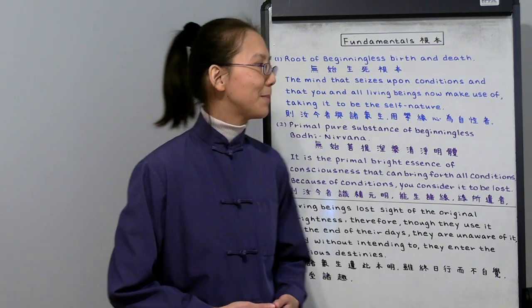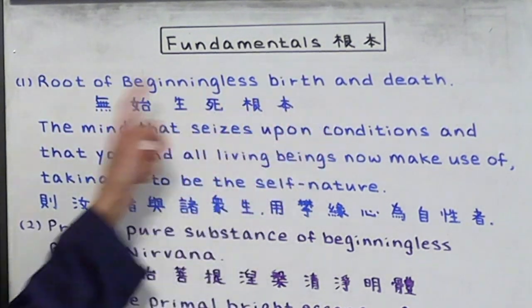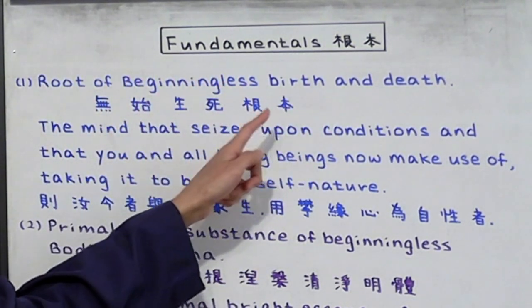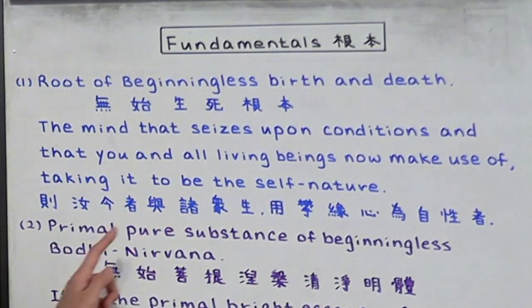There are basically two fundamentals. One is the root of beginningless birth and death. The root of reincarnation is our deluded mind. The second fundamental is the root of beginningless Bodhi Nirvana. The root of Nirvana and enlightenment is our pure mind.